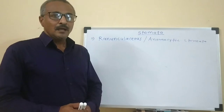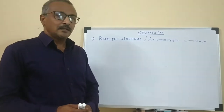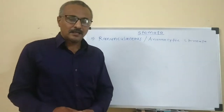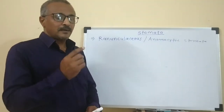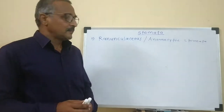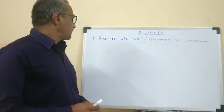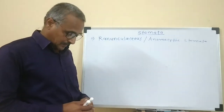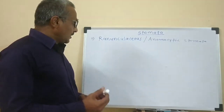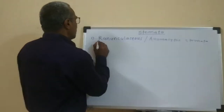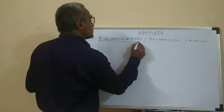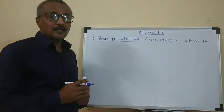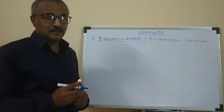Now let us see the stomata one by one. The first one is the ranunculaceous type of stomata. This ranunculaceous stomata is found in the plants of Ranunculaceae.